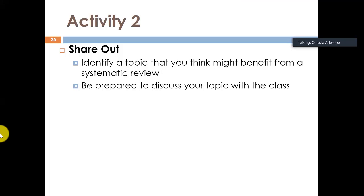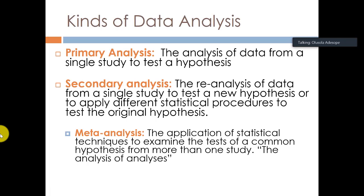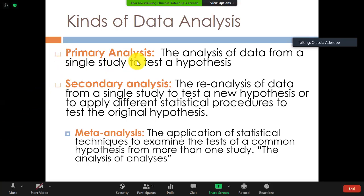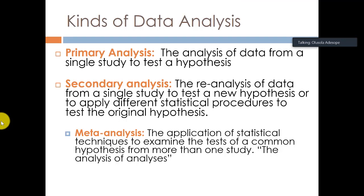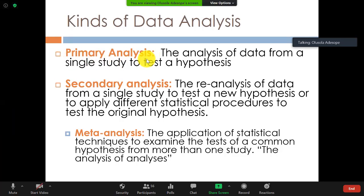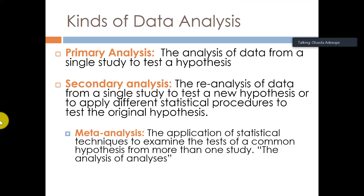There are different kinds of data analysis. Primary data analysis is what you do when you go out and work with people — you give them a survey, or you randomly assign participants to different groups — to test a single hypothesis or a set of related hypotheses. But in meta-analysis and systematic reviews, it is a re-analysis of data through the application of statistical techniques to examine a common hypothesis from more than one study. It is called a secondary analysis — we are not going out to interview people or get data from people directly; those data have already been collected and published.